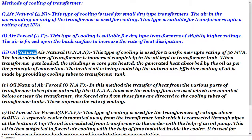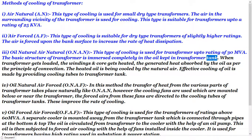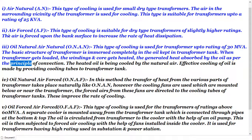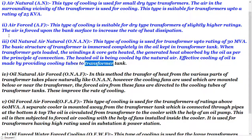3. Oil Natural Air Natural (ONAN): This type of cooling is used for transformers up to a rating of 30 MVA. The basic structure of the transformer is immersed completely in oil kept in the transformer tank. When the transformer gets loaded, the windings and core get heated. The generated heat is absorbed by the oil as per the principle of convection. The heated oil is then cooled by natural air, and effective cooling is made by providing cooling tubes to the transformer tank.